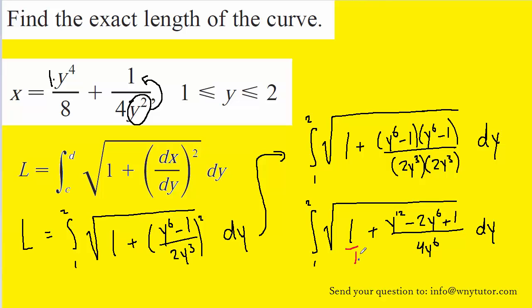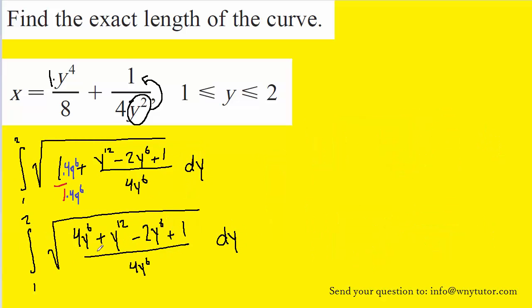So we can do so by multiplying both denominator and numerator by 4y^6. So let's go ahead and clean this up a bit.